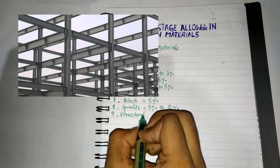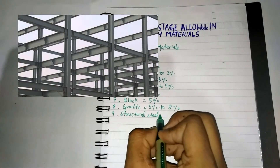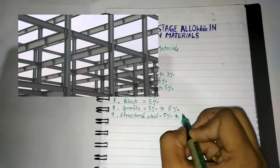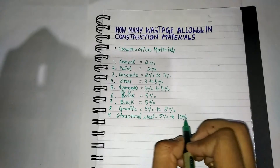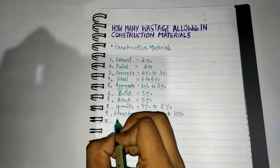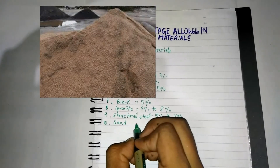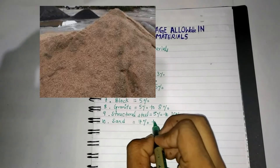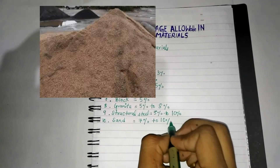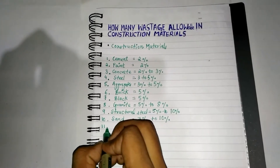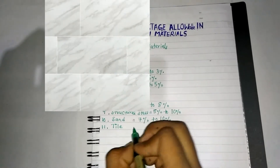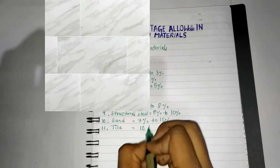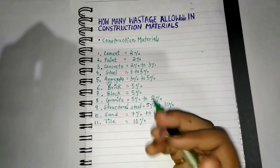Number nine: Structural Steel — five to ten percent. Number ten: Sand — seven to ten percent. Number eleven: Tiles — ten percent allowable wastage.